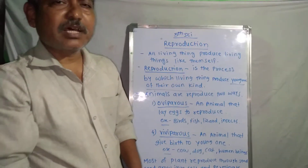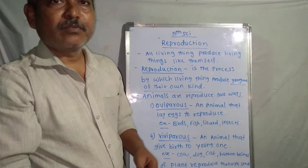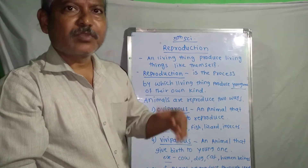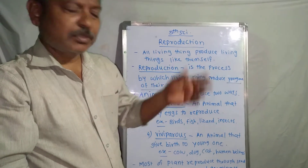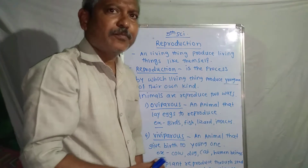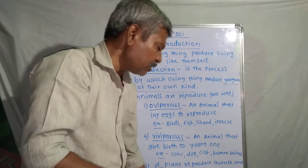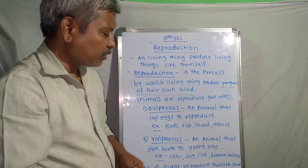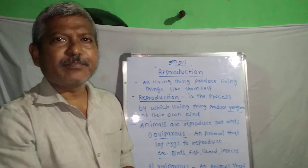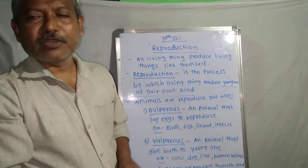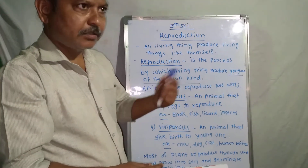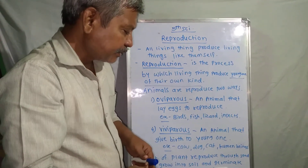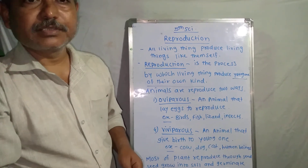Some plants reproduce through the stem. For example, potato reproduces through its stem, and mint also reproduces through its stem. Some plants reproduce through roots — the best example is sweet potato. Plants that reproduce through the stem include potato and turmeric.